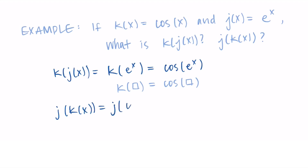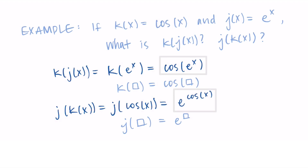Now swapping the order to find j of k of x: k of x is cosine of x. Since j takes e to the power of its input, j of something is e to that something. So we have e to the cosine of x. We've composed it both ways.